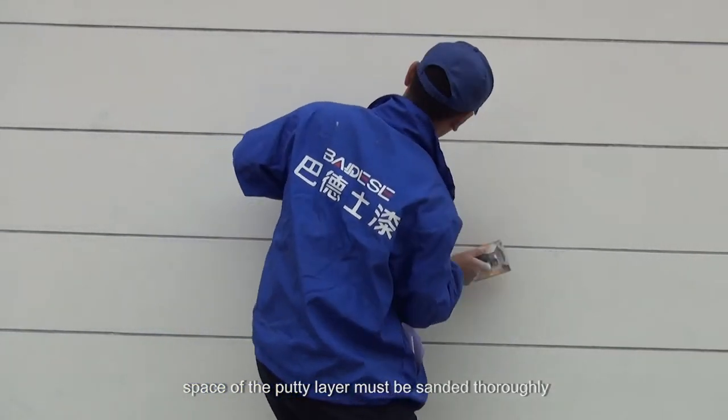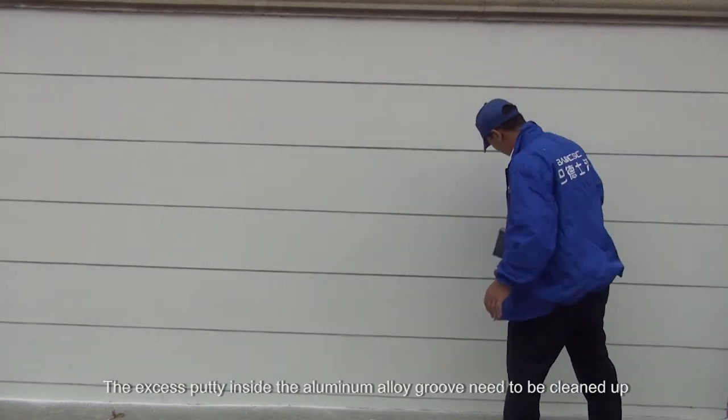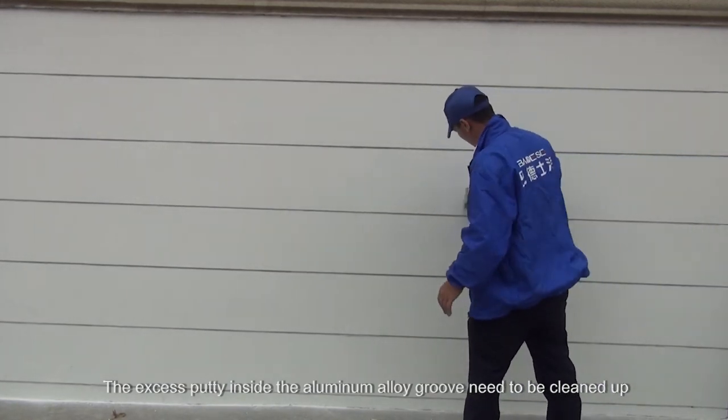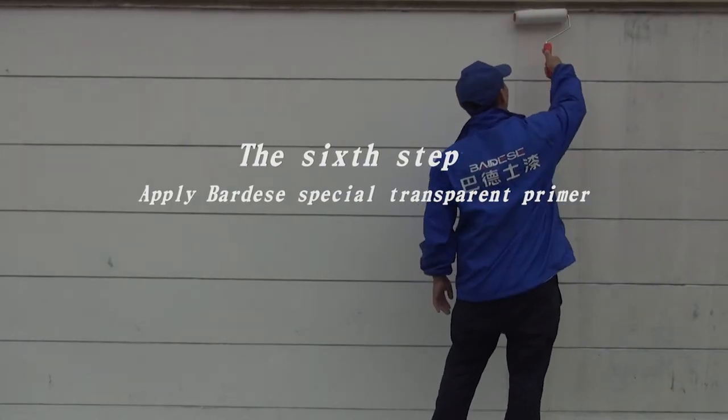The excess putty inside the aluminum alloy groove needs to be cleaned up. The sixth step: apply Bardese's special transparent primer.